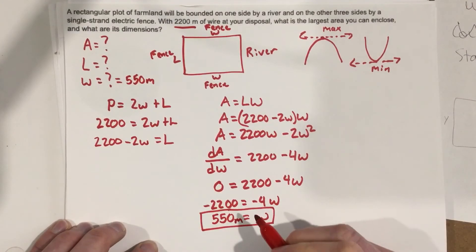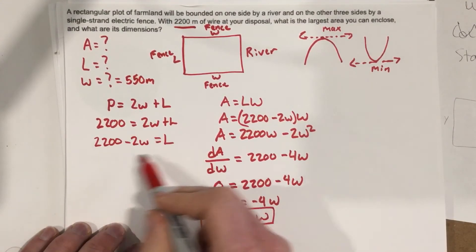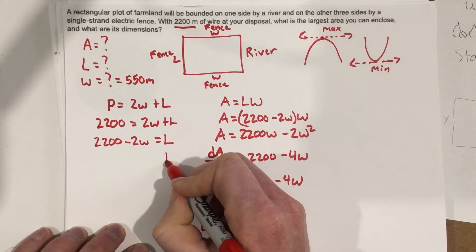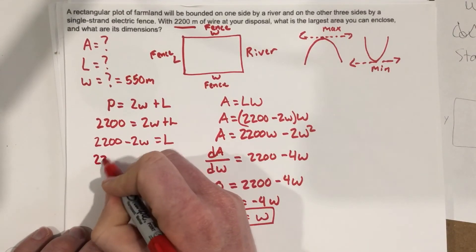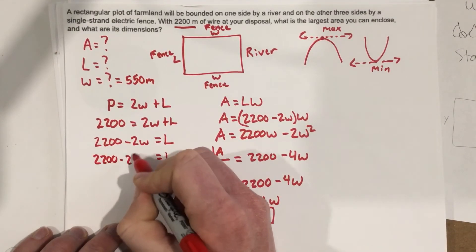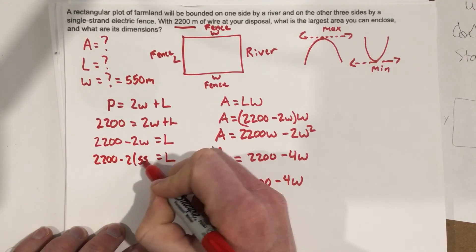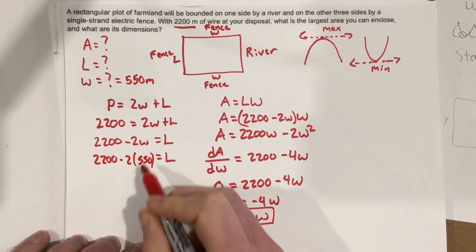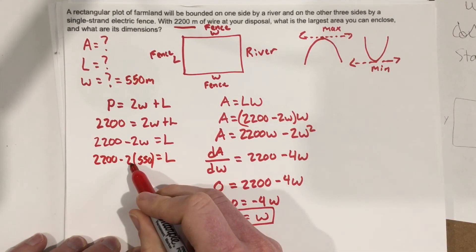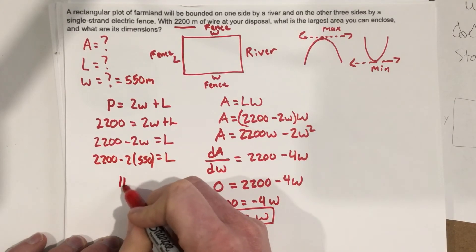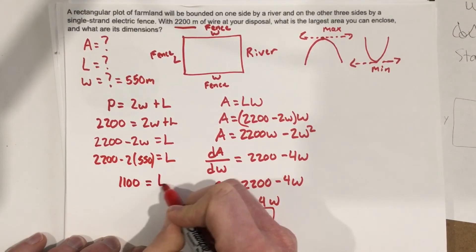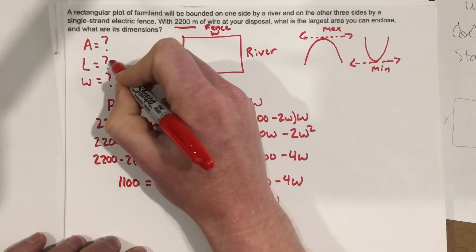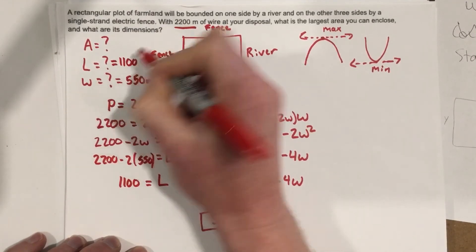What's the length, then? Well, I already have an equation right here which will give me the length. So, I'm going to say L equals 2200 minus 2 times 550. Well, 550 times 2 is 1100, 2200 minus that, that's 1100 for the length. So, we can call this 1100 meters.